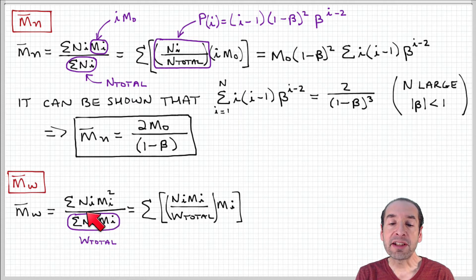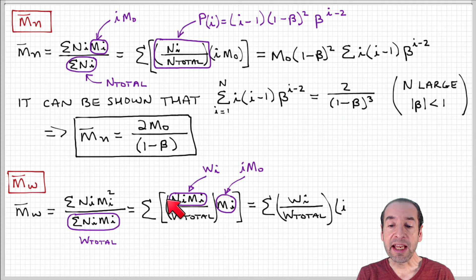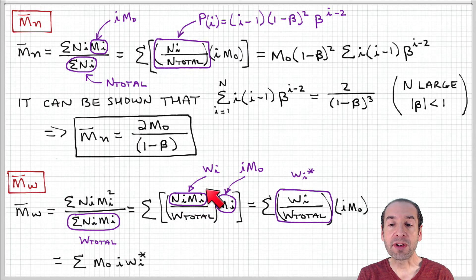I can take that constant into the summation in the numerator and further break this down. This NIMI is the weight of the fraction of polymers that have molecular weight I, the total weight of that fraction. And MI is the molecular weight of an I-mer.